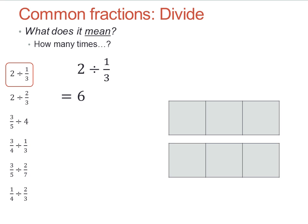Six. Interesting, hey? It's two wholes, and each whole has three-thirds, so it's two lots of three, which is six.